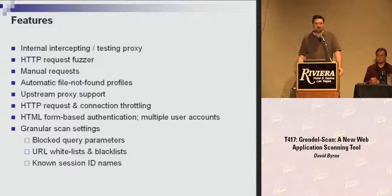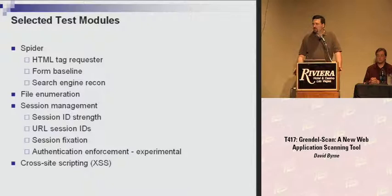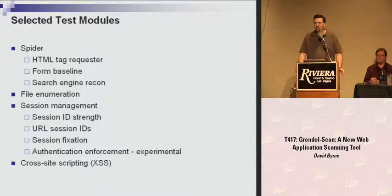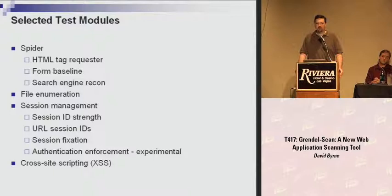This isn't a complete list of test modules, just the highlights. There are several spidering modules. The HTML tag requester is a traditional spider — it looks for tags with a source or href attribute value, and the tags tested are configurable by the user. The URL that it points at is then requested. There is a certain amount of risk associated with this.